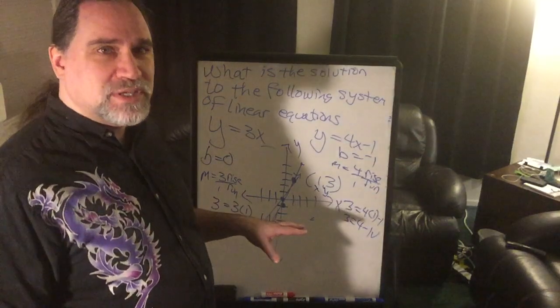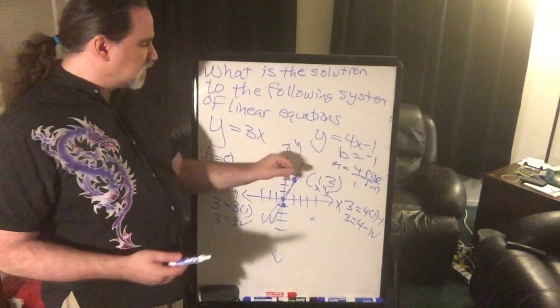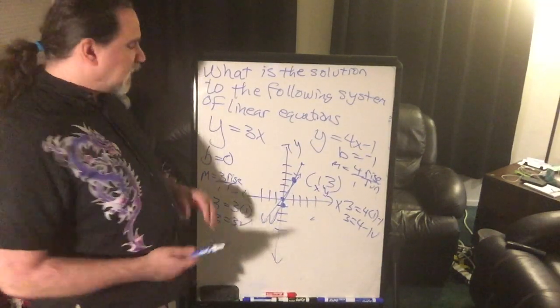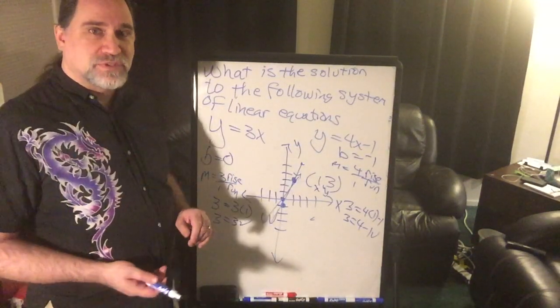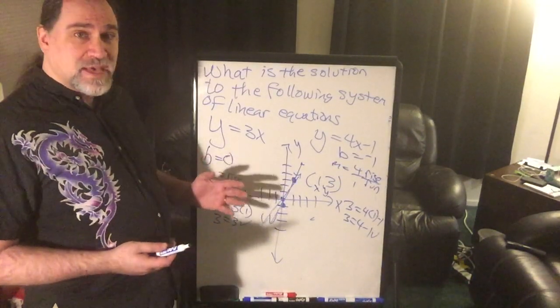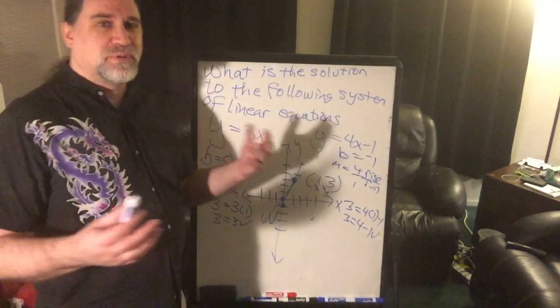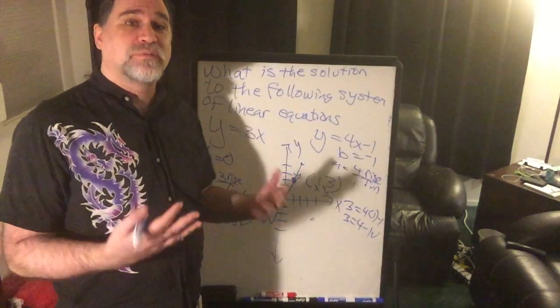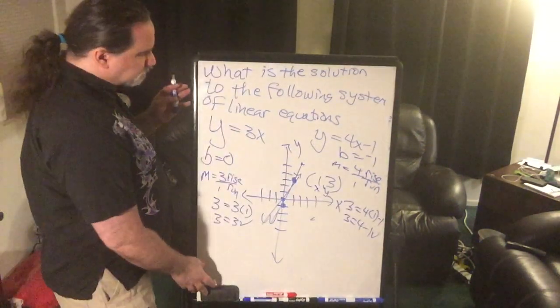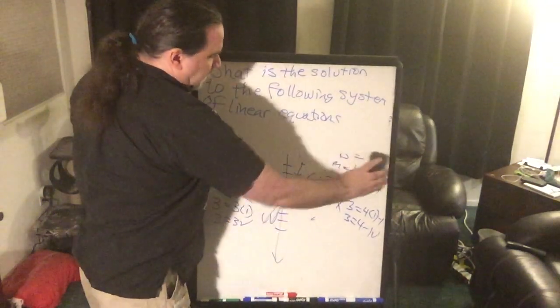And again, this is a fairly easy one because these equations were nice and simple. They were already in slope-intercept form, so I didn't have to come up with very much. I didn't need to make a table of values to generate the points for the graphs. Had I done that, I would have seen they both have the point 1, 3 in their table. That was an easy one. Let's try a not-so-easy one.